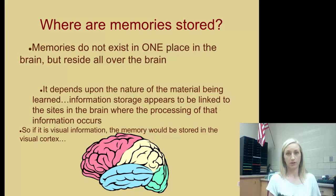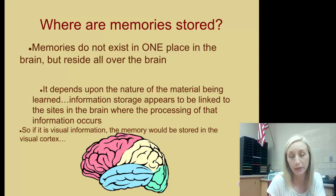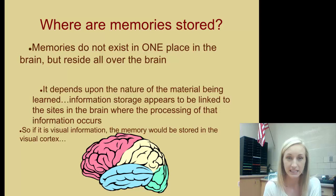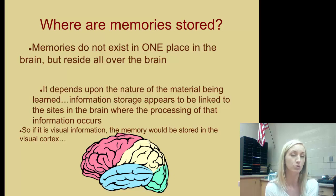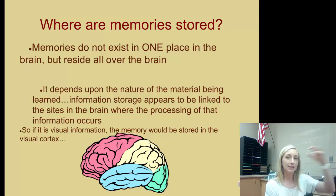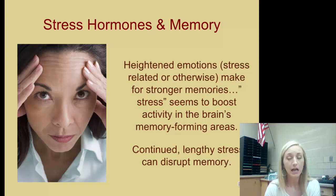So where are memories stored? That is the ultimate question with the memory trace and the engram. Memories do not exist in one place — they reside all over the brain, and it depends on the nature of the material being learned. Information storage appears to be linked to the sites in the brain where the processing of that information occurs. If it is visual information, the memory would be stored in the visual cortex. If it's auditory information, the temporal lobe and auditory cortex would be stimulated in both the processing and the retrieval of that memory.